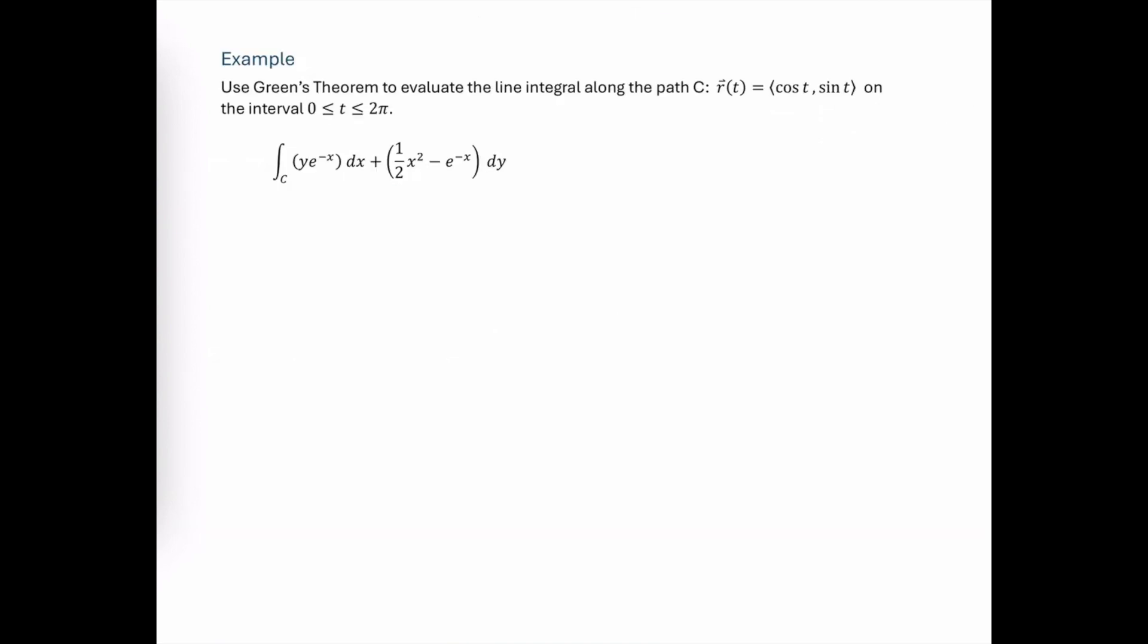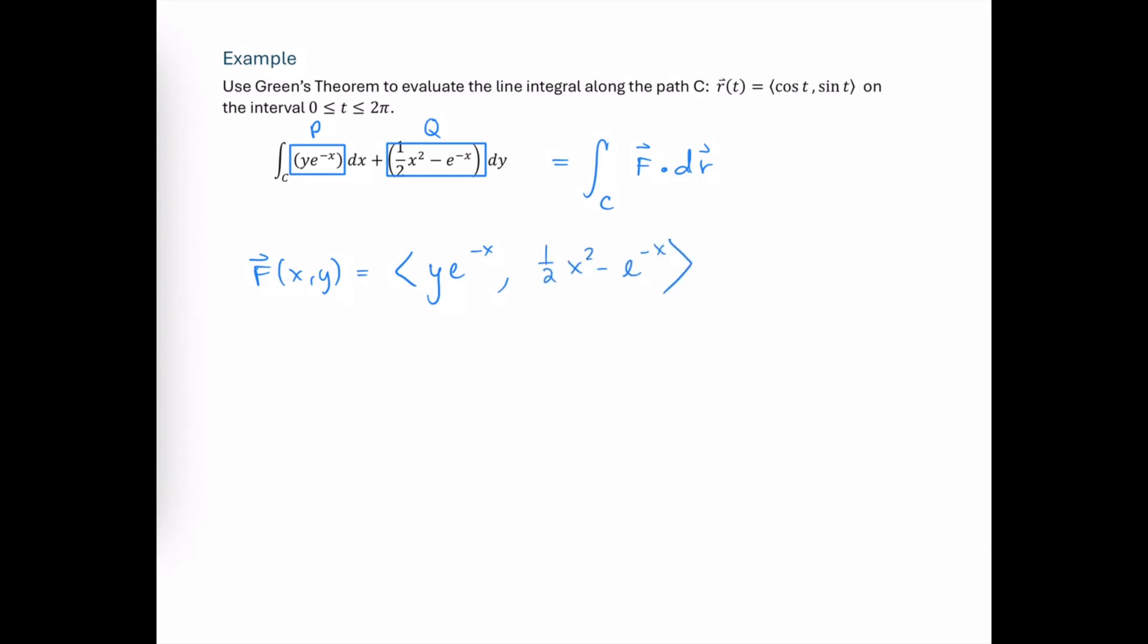So let's look at a quick example. We're asked to use Green's Theorem to evaluate this line integral. This line integral is expressed in differential form. It could also be expressed in our F dot dr form. But when it's expressed in the differential form, we can see that this expression here is our P scalar function, that's the horizontal component of the vector field. And this expression here is our Q scalar function, that is the vertical component of our vector field. So from this differential form, we can see that the vector field can be extracted from that integrand where y e to the negative x is the P component, and one half x squared minus e to the negative x is the Q component.